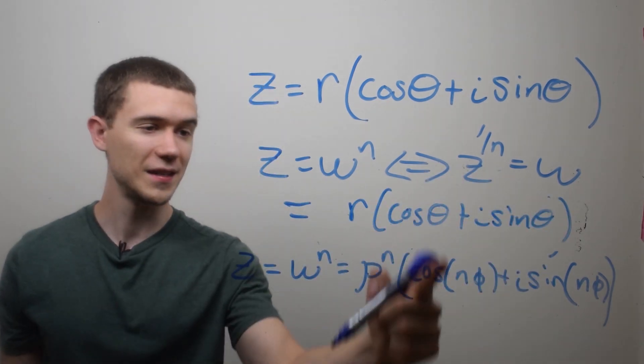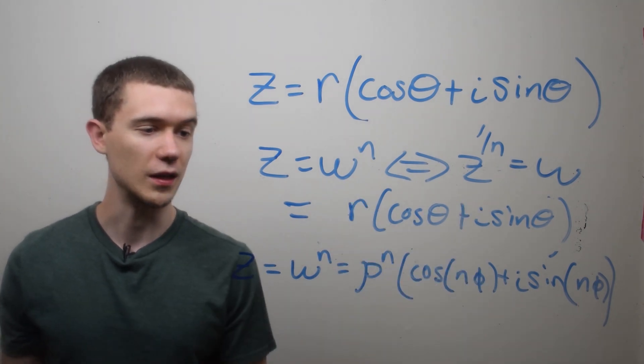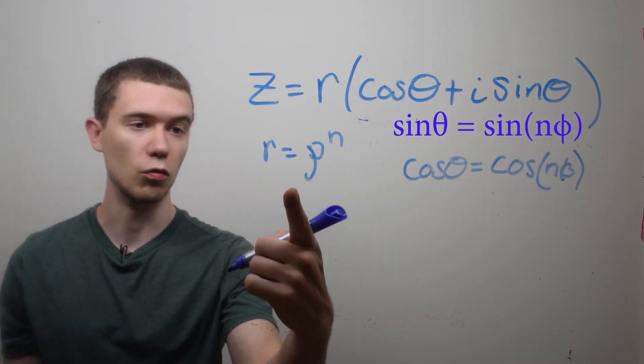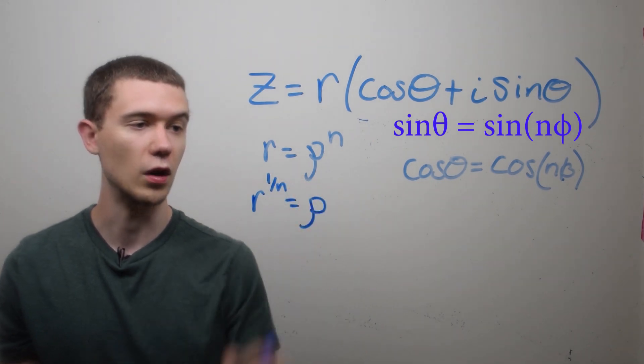Now since this is equal to z, we can sort of just match up the moduli and match up the trig parts. Here, I'll just solve for what rho should be by taking the nth root. So that's r to the 1 over n is equal to rho.